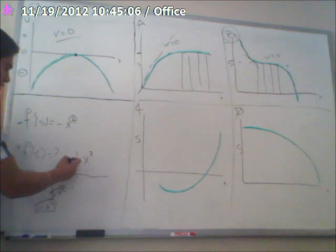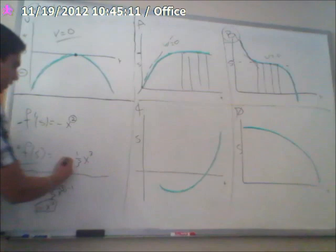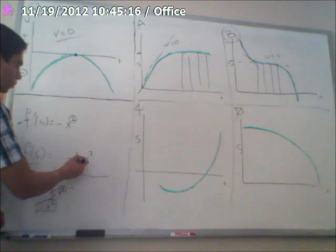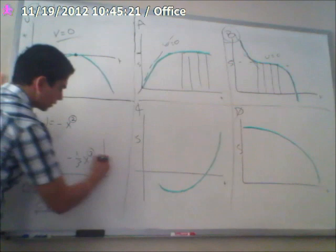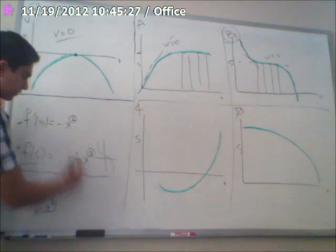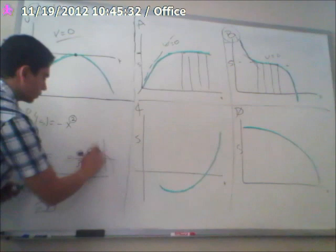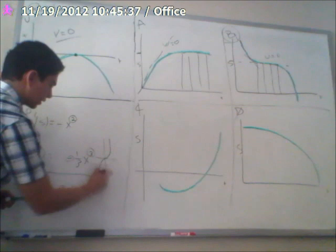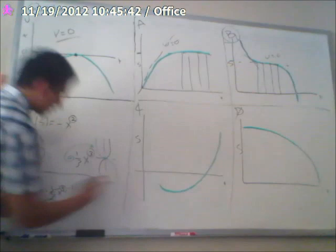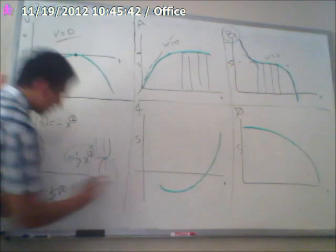Once we got the function, we can look at the graph and figure out which one is it. It's raised to the third power, so we know the graph will be somewhat like this. But it's negative, so the graph will be like this. And this is how you know that B is the right answer.